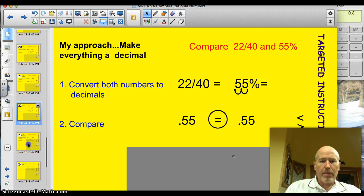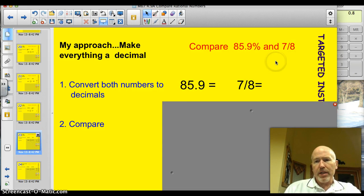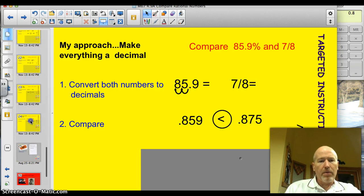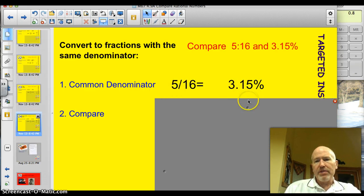All right. Let's see what we got. I think I got two more examples. Compare 85.9% and 7.8. We already did that one. Sorry about that. We've got one left. Compare 5/16 and 3.15%. Pause this and give it a shot. Now, okay, I'm back.